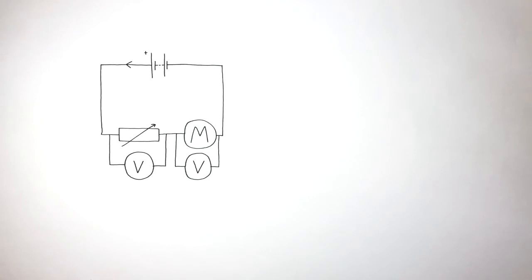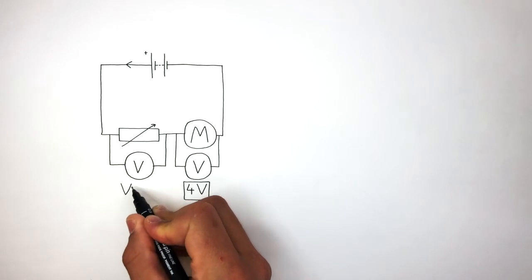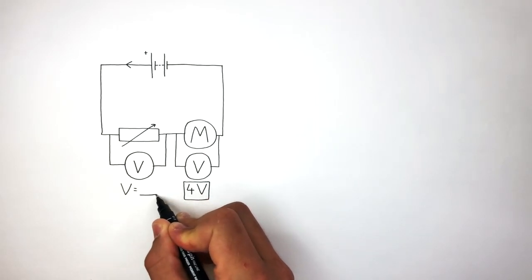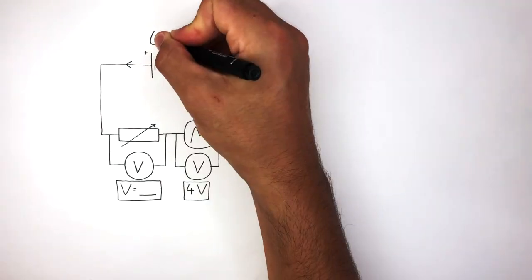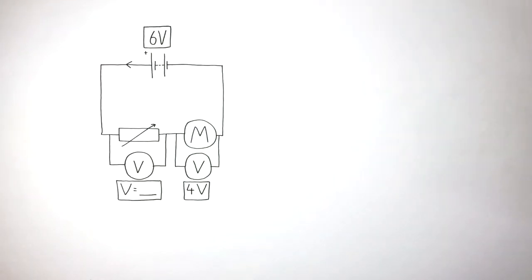Here we have a series circuit containing a battery, a variable resistor, a motor, and two voltmeters connected in parallel. The voltmeter connected to the motor reads four volts, and the battery is a six volt battery. The potential difference is shared between the components in a series circuit, so the potential difference across the variable resistor is 2 volts.